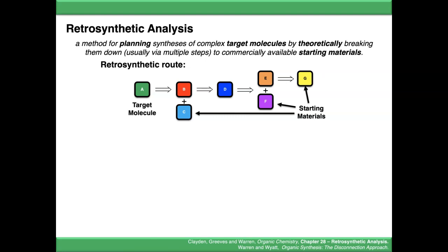In this synthesis, we're saying that C, F and G we can buy from chemical suppliers, but all of these intermediates you can't, so we're going to have to make them. That's our retrosynthetic route, that's our plan for our synthesis.